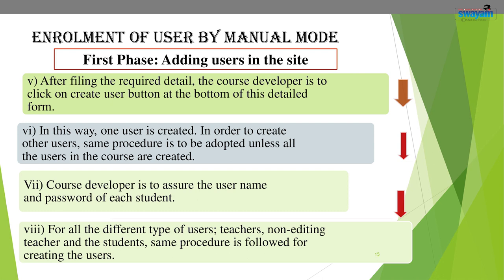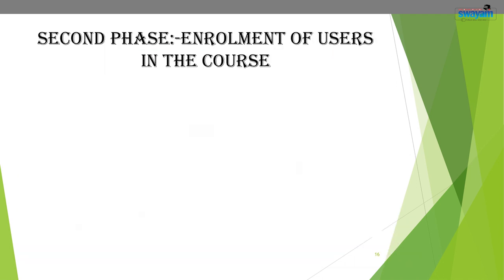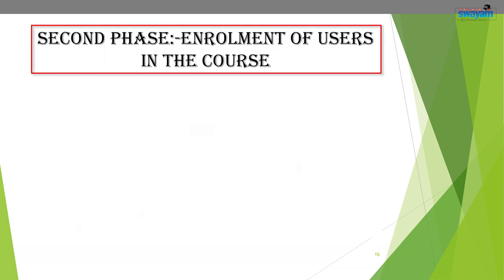The course developer assures the username and password for each student. For all types of users — teachers, non-editing teachers, and students — the same procedure is followed for creating users. Then comes the second phase: enrollment of the users. In the second phase, the users created in the first phase are enrolled in the course.